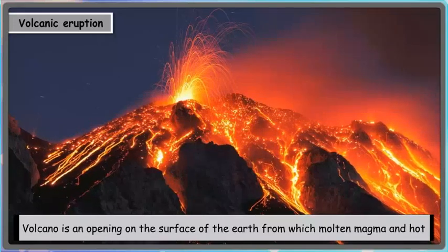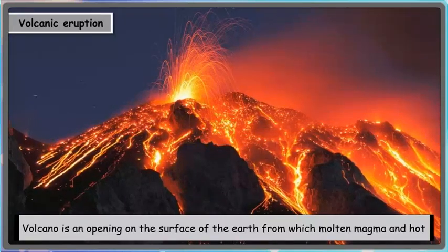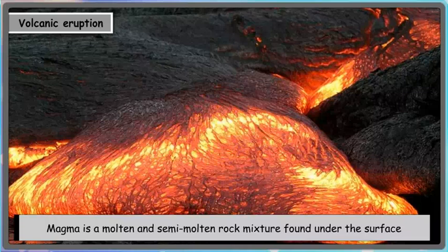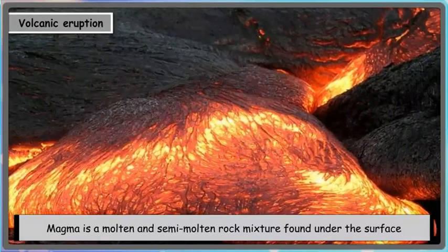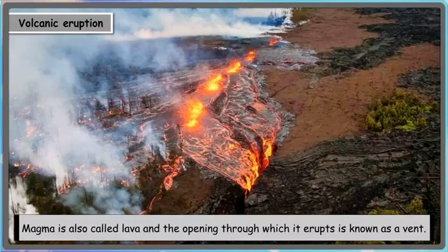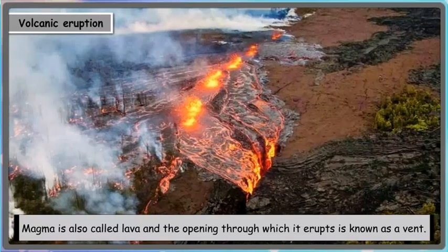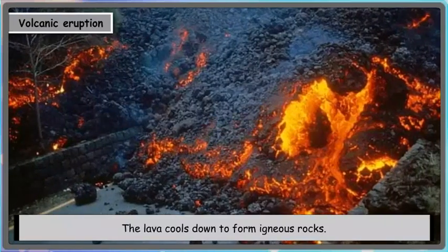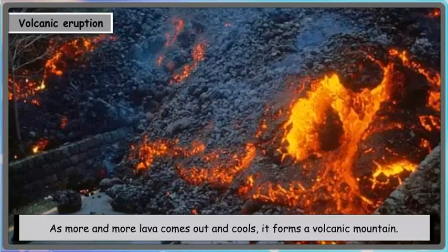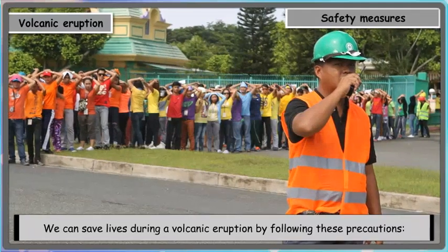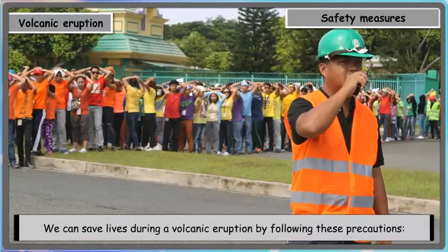A volcano is an opening on the surface of the earth from which molten magma and hot gases erupt with great force. Magma is a molten and semi-molten rock mixture found under the surface of the earth. Magma is also called lava, and the opening through which it erupts is known as a vent. The lava cools down to form igneous rocks. As more and more lava comes out and cools, it forms a volcanic mountain.